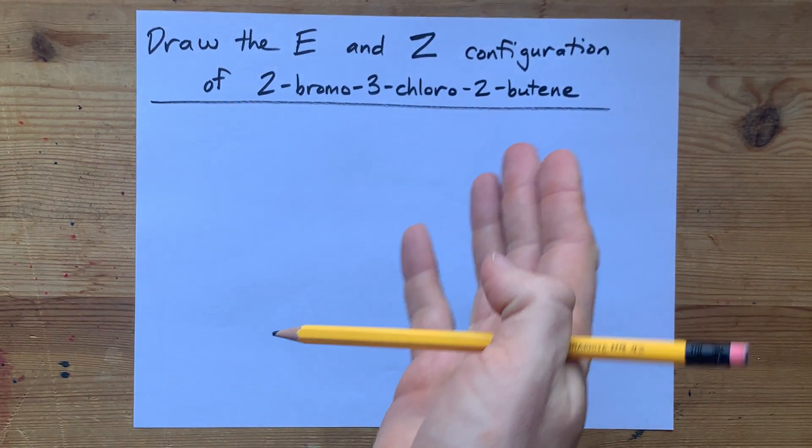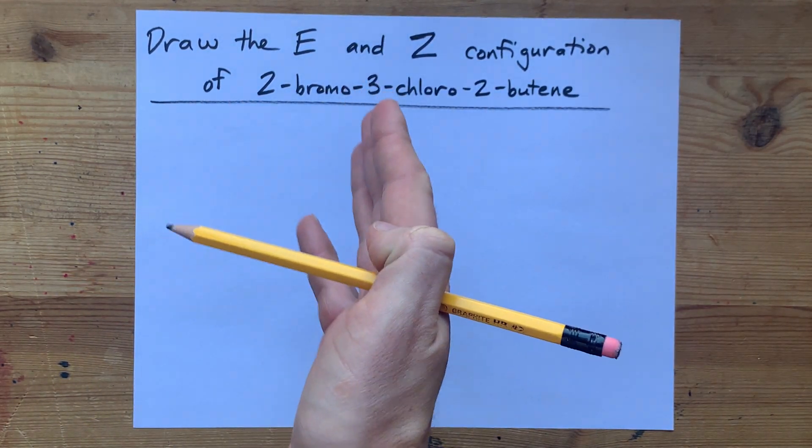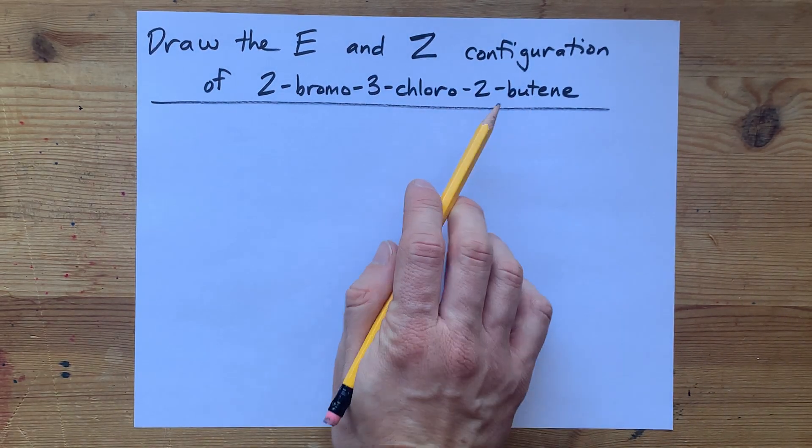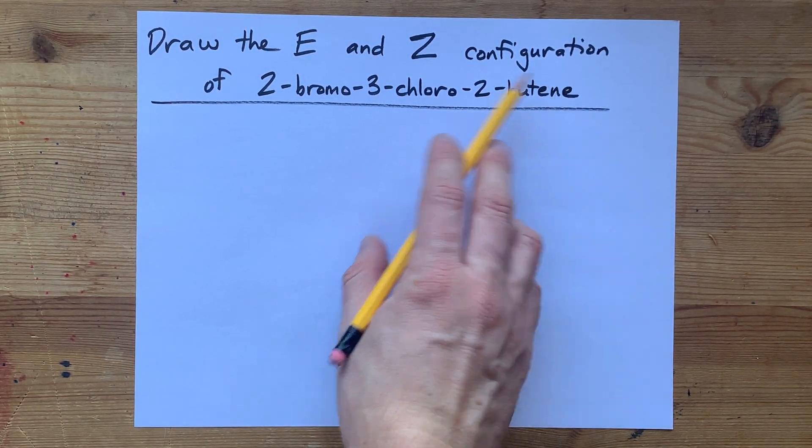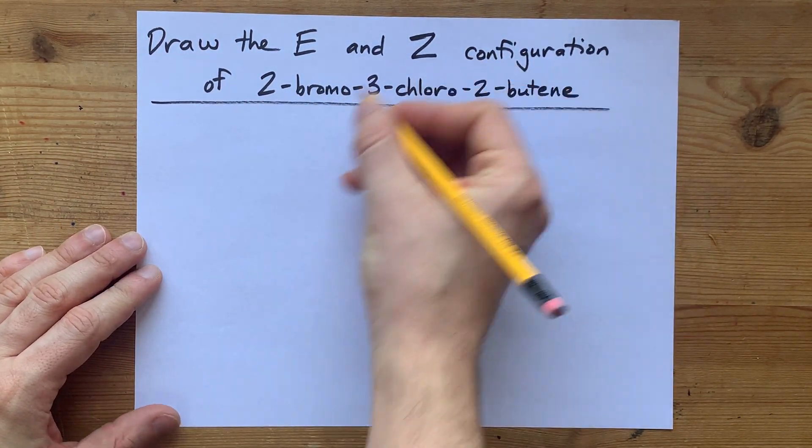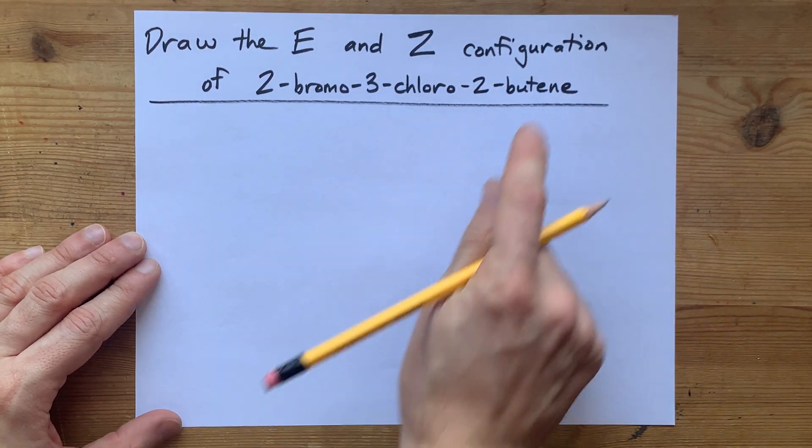Let's draw the E and Z configurations of 2-bromo-3-chloro-2-butene. Now the official IUPAC name should have been bute-2-ene, but this is how the question was sent to me. We're going to roughly draw what we think this molecule is going to look like, and then we'll figure out the isomers.